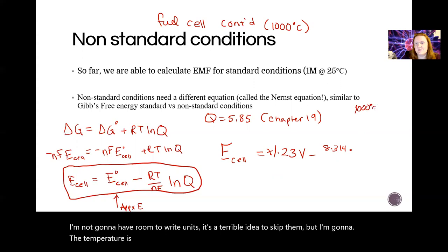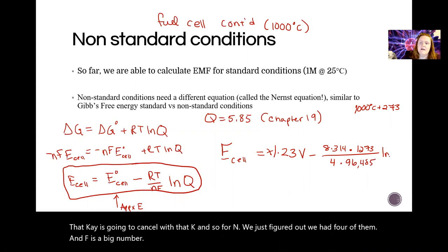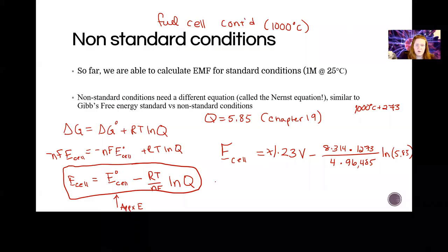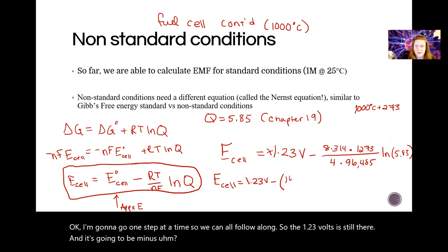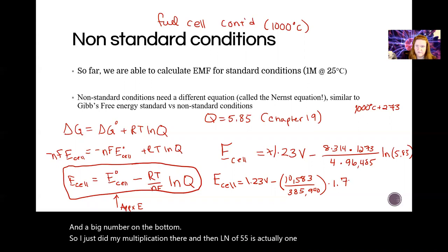The temperature is 1000 Celsius plus 273. So that K is going to cancel with that K. And so for N we just figured out we had four of them. And F is a big number. And then it's going to be ln of this number. Okay, I'm going to kind of go one step at a time so we can all follow along. So the 1.23 volts is still there. And it's going to be minus 10,583 on the top. And a big number on the bottom. So I just did my multiplication there.